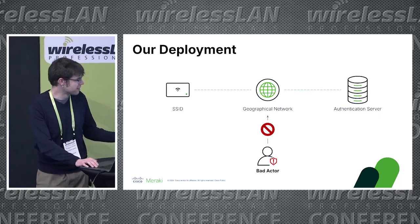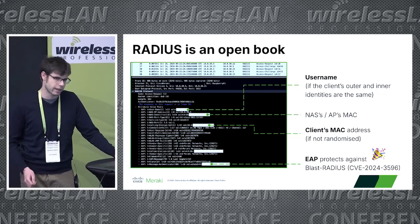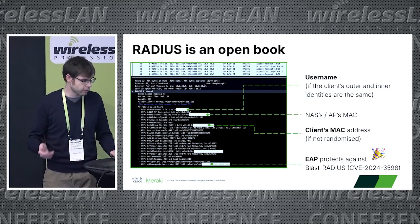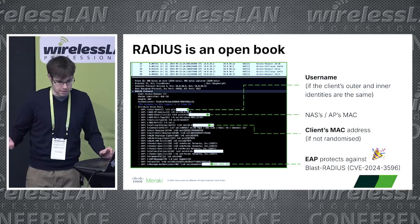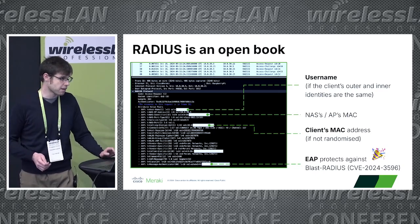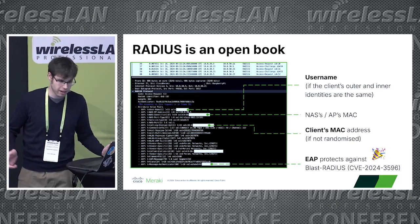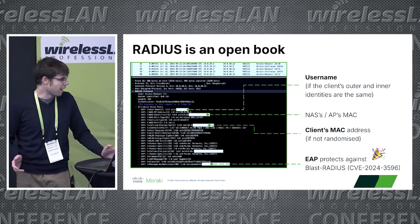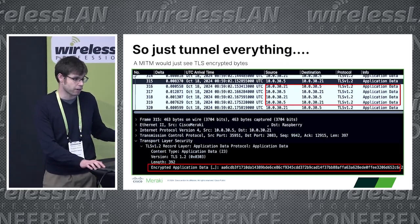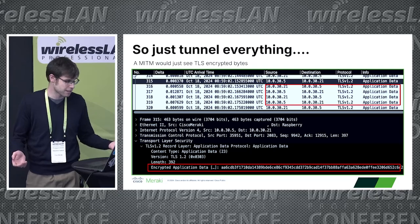We have different options. First is RADIUS; however, RADIUS is kind of an open book — a lot of information gets carried in plain text. There have been a lot of improvements lately with randomization of MAC addresses or username obfuscation with anonymous identities. We also dodged a bullet with BlastRadius fairly recently — a couple of months ago — because we use EAP. However, we really don't know what bad actors want to use against us in the future. So the best idea is to encapsulate everything within a TLS tunnel, and this is RadSec.